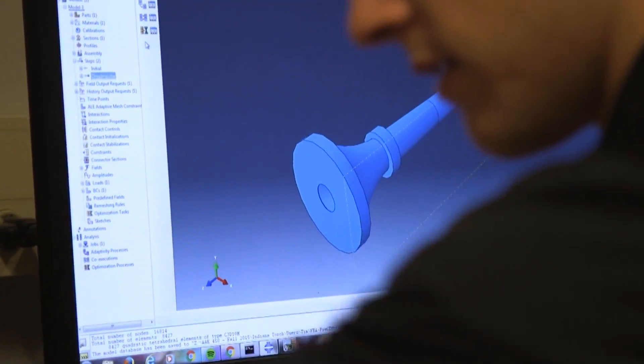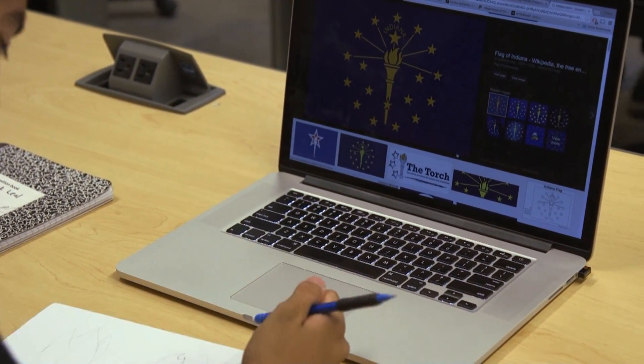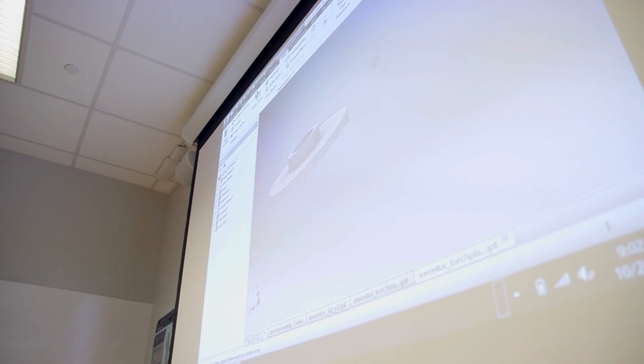We'd like to basically design a torch that has meaning to Indiana, so it's kind of representative of the Indiana state flag as well as shows the technology. We're building sort of a high-tech torch. It's gonna be the first of its kind.